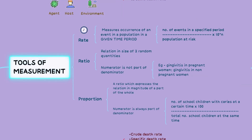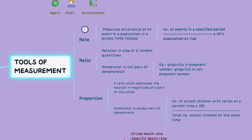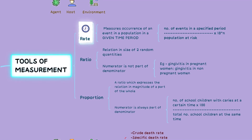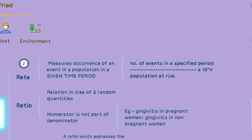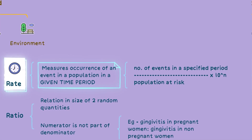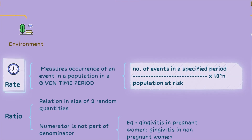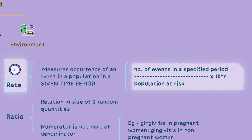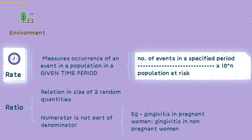In epidemiology, several tools of measurement are commonly used to quantify and understand the occurrence and distribution of health-related events in populations. Some of these tools include rates, ratios and proportions. A rate measures the occurrence of an event within a specific population over a given time period. It is calculated by dividing the number of events by the population at risk, then multiplying by a multiplier of 10 raised to the power of n for ease of interpretation.